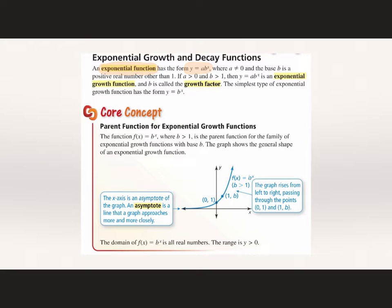We have exponential growth when b is greater than 1, and exponential decay when it's less than 1. This page covers our exponential growth functions, so b is greater than 1, and our parent function looks like this. All of your exponential functions — the graphs of exponential functions — will have this shape.